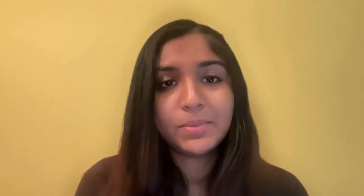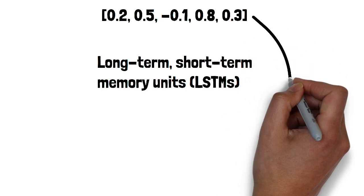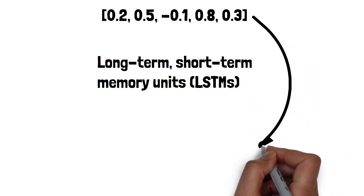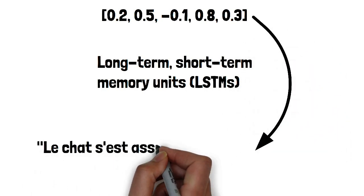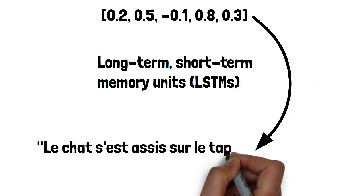Once the encoder has transformed the input sentence into a meaningful representation, the decoder steps in. The decoder's role is to take that representation and generate a new sequence, which could be a response, a translated sentence, or an entirely new story.